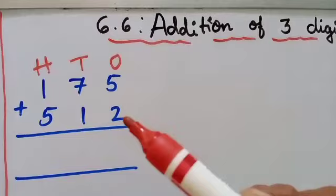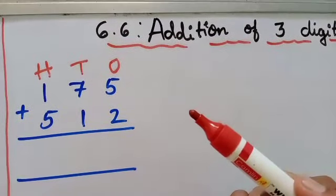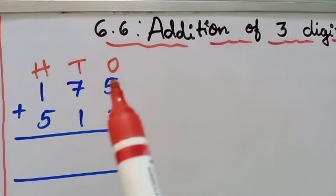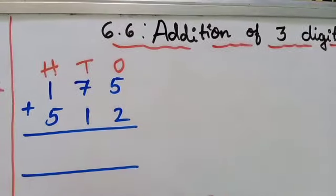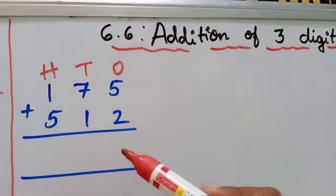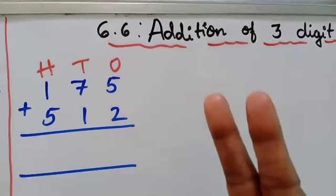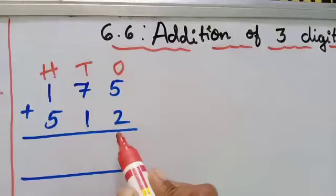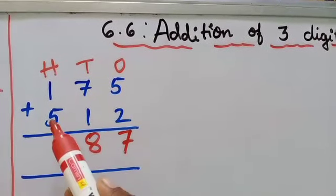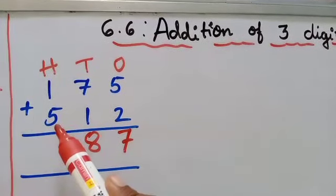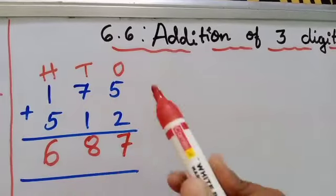This is just an introduction for first standard. Later on in the next class you are going to learn more about this topic. So let's solve these sums now. We have written the place value first, and now we have to start to add. We have to start from ones place. 5 plus 2 — so 5 in the mind, 2 in your hand. 5 after 6, 7. So write 7 here. Next, 7 plus 1 is 8. And 5 plus 1 is 6. We don't have any carry over here because all results are below 10.